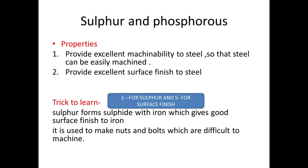Next are sulfur and phosphorus. Sulfur and phosphorus provide machinability and surface finish. These are used in free-cutting steel, which has high machinability.